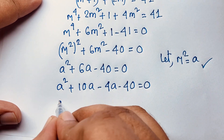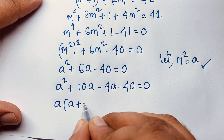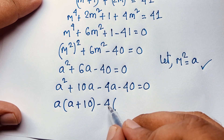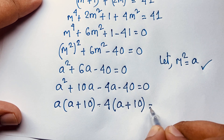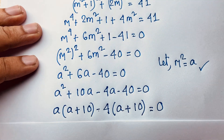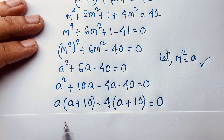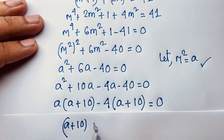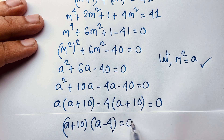Here, a is common, so a(a + 10), minus 4 is common: − 4(a + 10) = 0. So (a + 10)(a − 4) = 0.